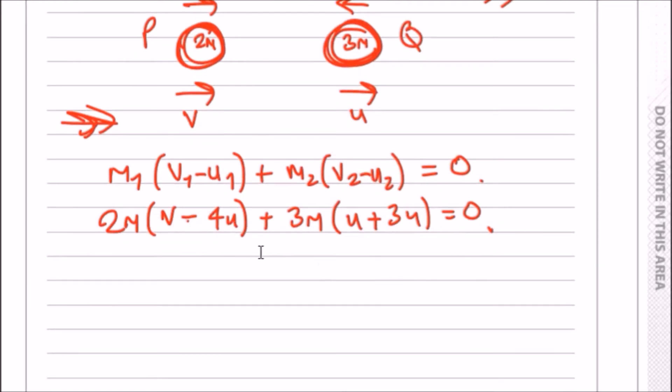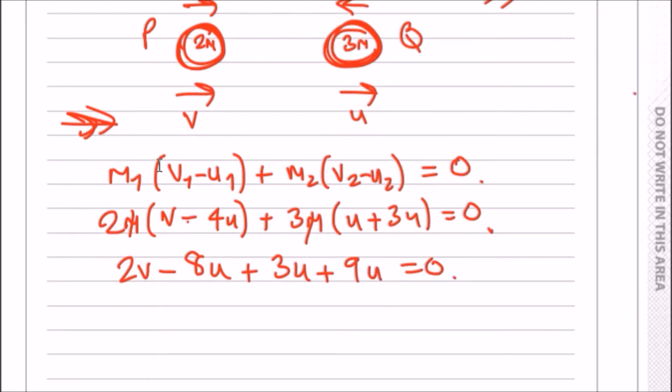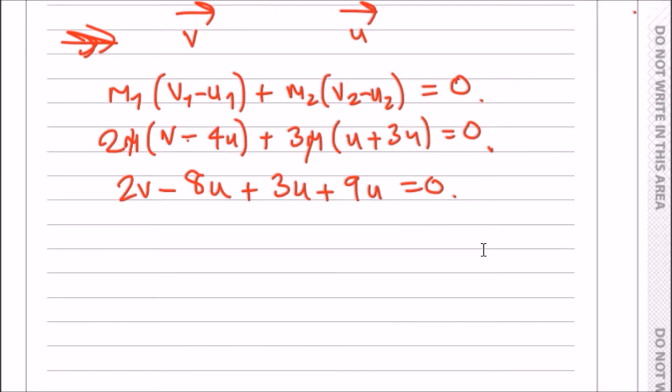Now all you do is just tidy up. Let's have a look. Firstly, we can cancel all the m's out. Expanding the bracket, we should have now 2v minus 8u plus 3u plus 9u equals 0.